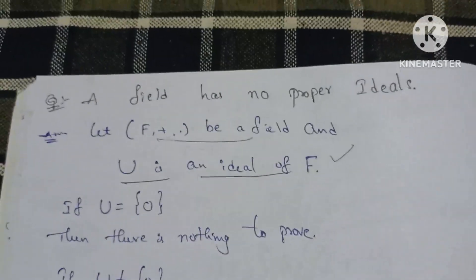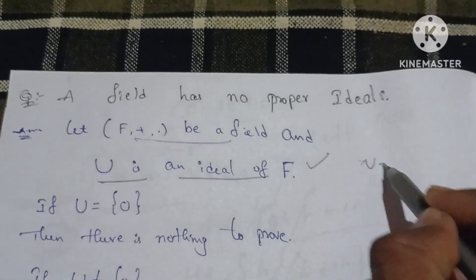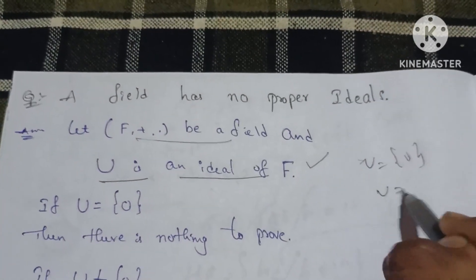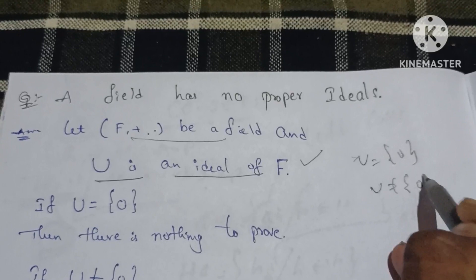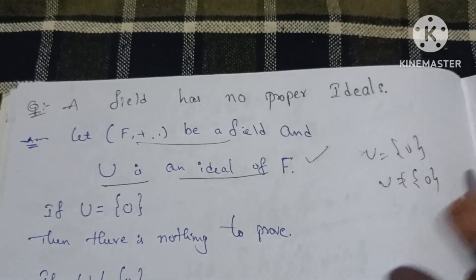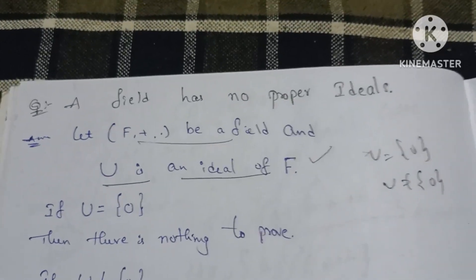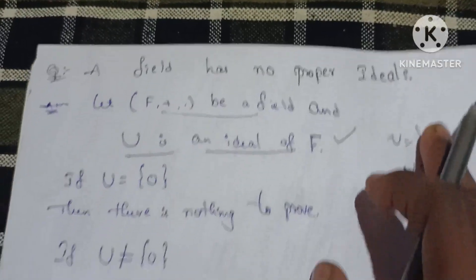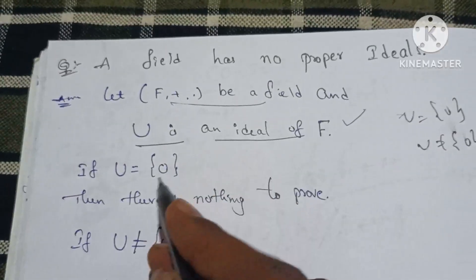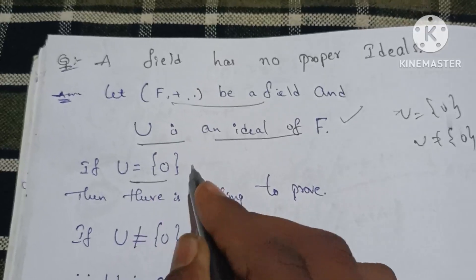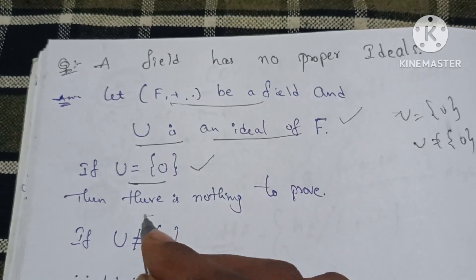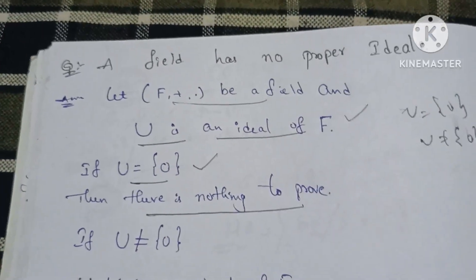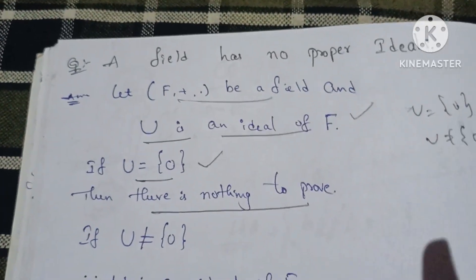I have two conditions to show for this problem's solution. First, U is equal to 0. If U equals 0, there is nothing to prove. The second condition is U not equal to 0.